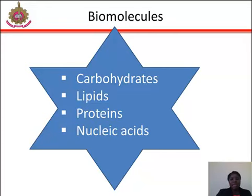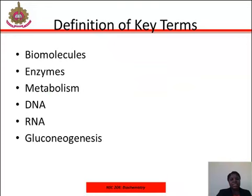The most common nucleic acids are deoxyribonucleic acid, which is DNA, and ribonucleic acid, which is RNA. The monomers of nucleic acids are called nucleotides.